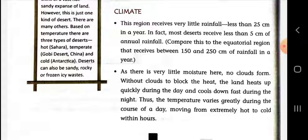In desert regions, due to less moisture, there are no clouds. Clouds act as an umbrella against the heat of the sun, so here, due to fewer clouds, the land quickly heats and quickly cools. The temperature during the day is extremely high and at night it is extremely cold. This is the main climate characteristic of deserts, which is why they are not favorable for human settlements.